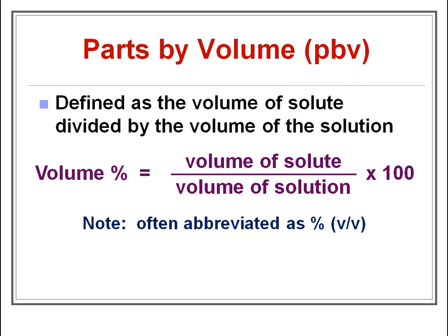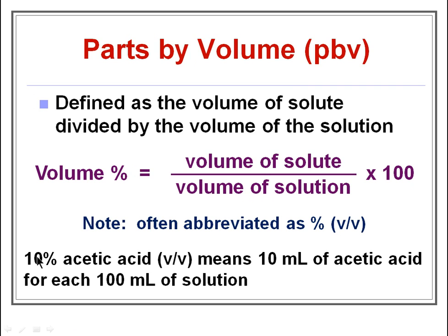For example, if it is written as 10% acetic acid (v/v), or volume by volume, it means 10 ml of acetic acid for each 100 ml of solution.